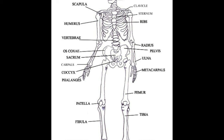For pelvis bone names, use P O S and C, which stands for pelvis, os coxae, sacrum, and coccyx.